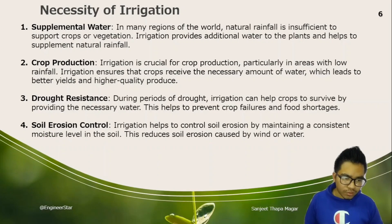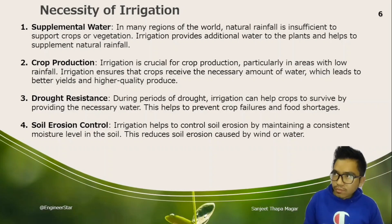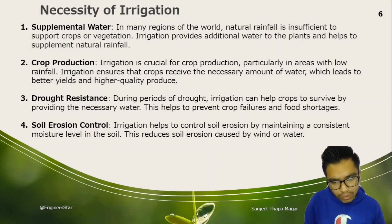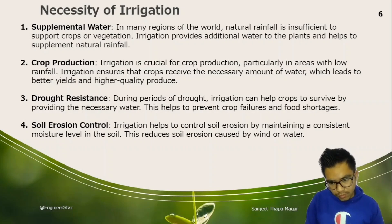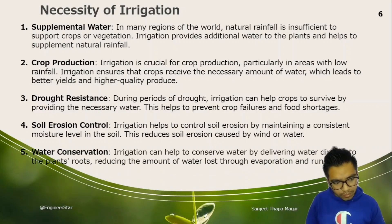Soil erosion control is another benefit. Irrigation helps to control soil erosion by maintaining a consistent moisture level in the soil. Controlled moisture levels reduce soil erosion caused by wind or water.